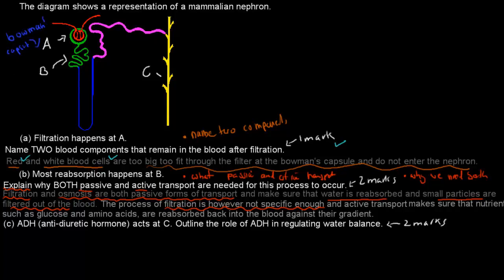And we need active transport in addition to passive transport to make sure that nutrients such as glucose and amino acids are reabsorbed back into the blood against the gradient. This wouldn't happen for diffusion because diffusion only works from a high concentration to a low concentration, and if it goes against the gradient, that means there's a low concentration to a high concentration. So this is the opposite of diffusion.